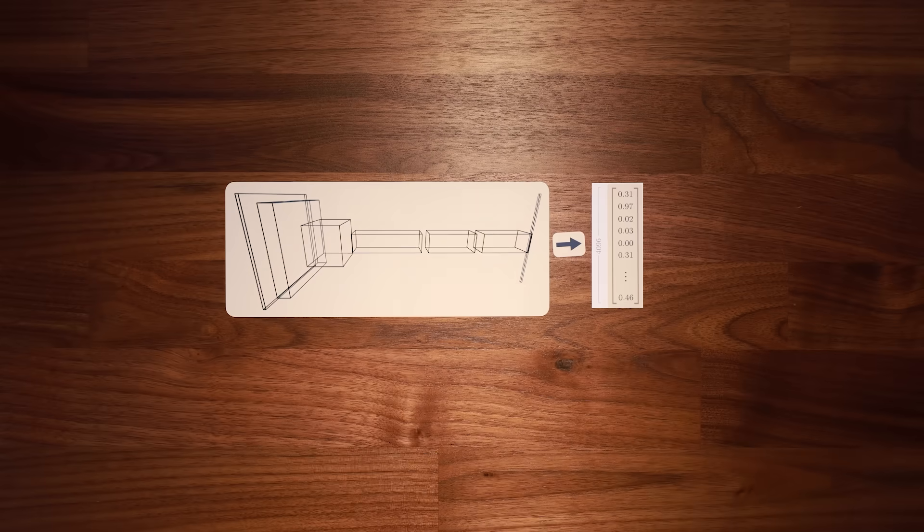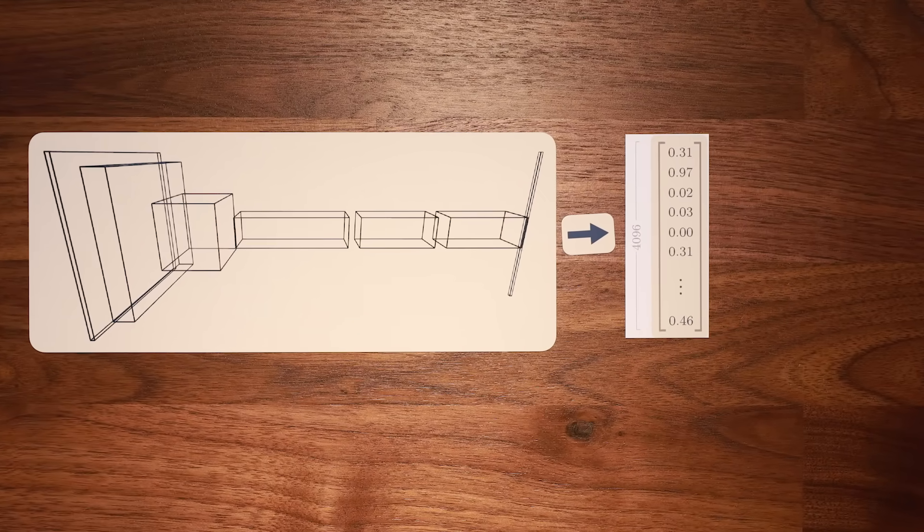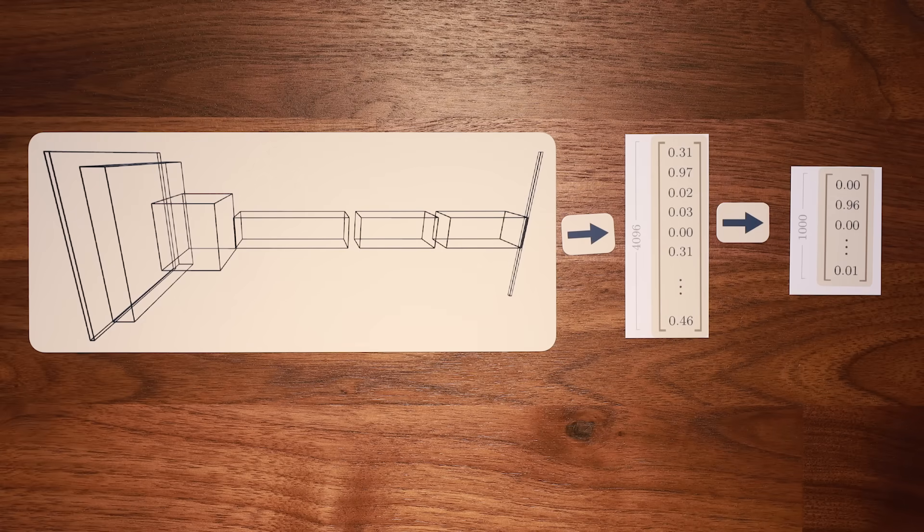By the time we reach the final layer of AlexNet, our image has been processed into a vector of length 4096. The final layer performs one last matrix computation on this vector to create a final output vector of length 1000, with one entry for each of the classes in the ImageNet dataset.